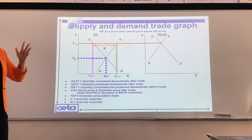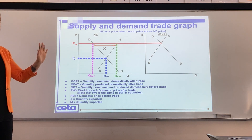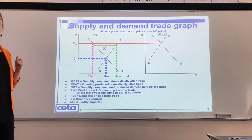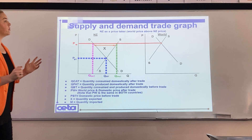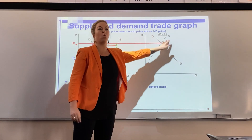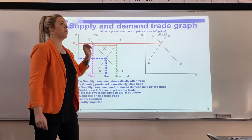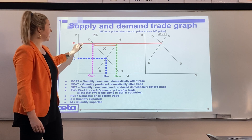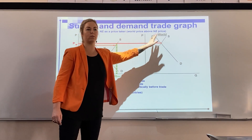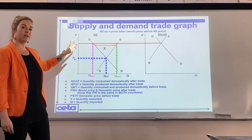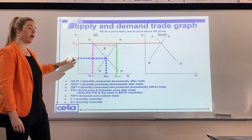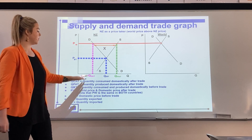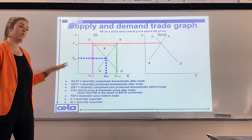Previously we used the two-country model with two graphs side by side, looking at two countries to see who was the importer and who was the exporter. This uses a similar concept but with just a world price graph. If we were to put the whole world's market here, this would be the world price — the line goes all the way across to meet world demand. We can see the same scenario: world price is above the country's equilibrium, so we export that difference.